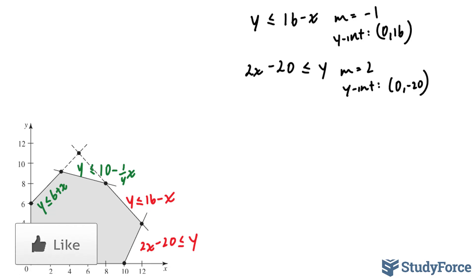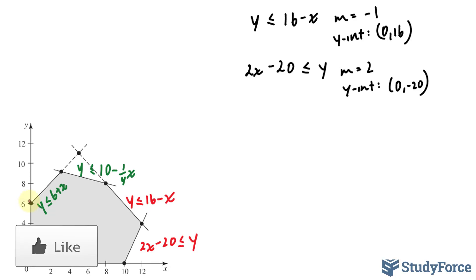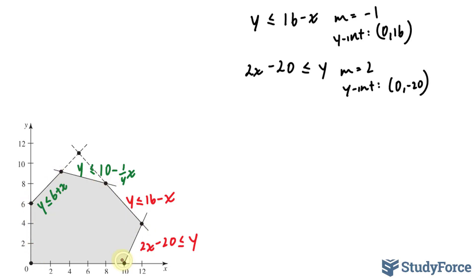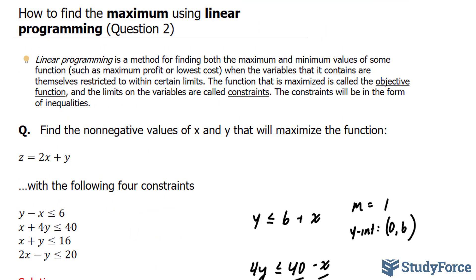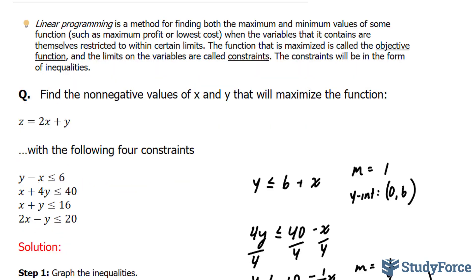That being said, to find out what maximizes z, we need to find the points of intersection along this shaded region — this point, this point, this point, this point, this point. And then subsequently substitute those points of intersection back into our equation z = 2x + y. Only then will we find out what will optimize this function.